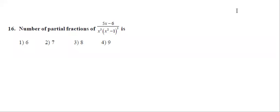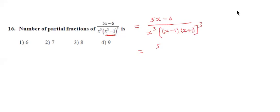Sixteenth question: number of partial fractions of (5x-6) divided by the denominator. Observe the denominator: x³ and x² minus 1 is there. x² minus 1 is a reducible polynomial — we can write it as x minus 1 into x plus 1. So the denominator is x³ into (x-1)³ into (x+1)³. The denominator has 3 plus 3 plus 3, totally 9 terms.